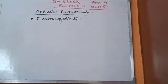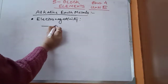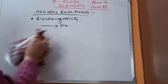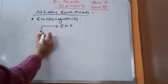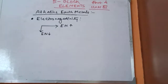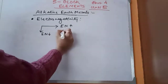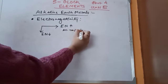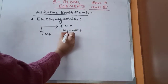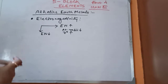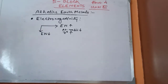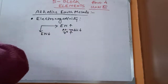Across a period, electronegativity increases. Across a period the atomic radii decrease, so the effective nuclear charge on the outer electrons increases, and the incoming electron faces a greater effective nuclear charge, so the atoms have a greater tendency to attract electrons towards themselves — electronegativity increases across a period.